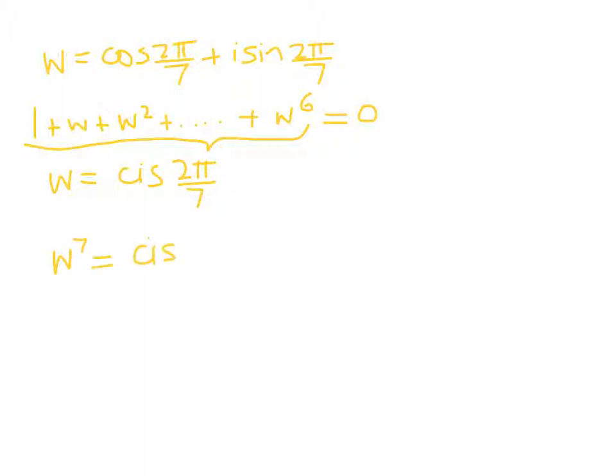Well, w⁷ is cis(2π/7)⁷, and we know from de Moivre's theorem that that gives us cis(14π/7) which is cis(2π). So think about what that gives us, that's just equal to 1.